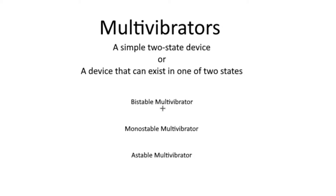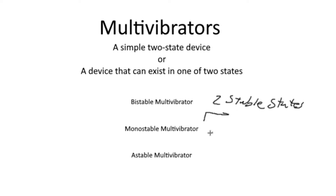The bistable multivibrator is a multivibrator that has two stable states. If you take a bistable multivibrator in the high state, it will remain in the high state indefinitely until it is triggered by an external event — usually another signal. If you get a trigger signal, it will change from one stable state to the other and remain in that stable state until it receives another trigger. Because it has two stable states, it will prefer to stay in whatever state it's put in unless acted upon by an external signal.